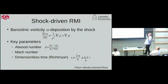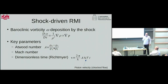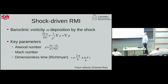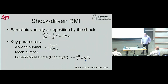In the case of Richtmeyer-Meshkov instability, it helps to look at the Navier-Stokes equations in the form where you take the curl of both sides. On the left you end up with the material derivative of vorticity, and on the right there is a bunch of terms. If we are speaking about a shock propagating through an initially quiescent volume, the leading term is proportional to the cross product of gradients of density and pressure. The relevant parameters are the Atwood number, the Mach number, and with Richtmeyer's linear theory we can formulate a dimensionless time related to the Atwood number, the wavelength of the initial perturbation, and the piston velocity after the shock.